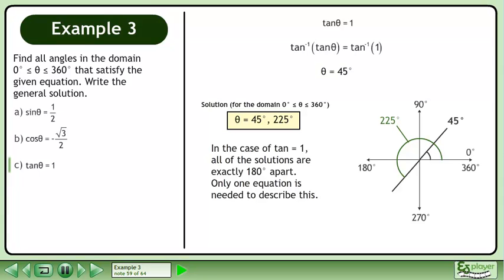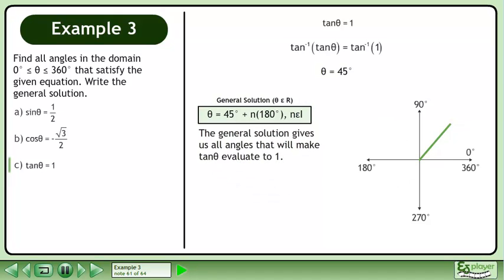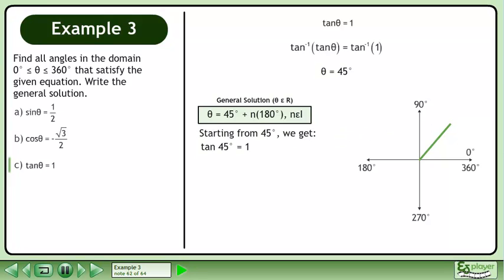In the case of tan θ equals 1, all of the solutions are exactly 180 degrees apart, so only one equation is needed to describe this. The general solution is θ equals 45 degrees plus n times 180 degrees, where n belongs to the set of integers. The general solution gives us all angles that will make tan θ evaluate to 1. Tan of 45 degrees equals 1, tan of 225 degrees equals 1, tan of 405 degrees equals 1, and so on.